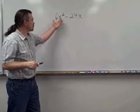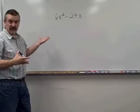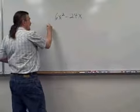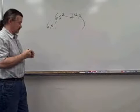What do we have as a common factor between 6x squared and 24x? Well, hopefully we can see right off the bat that 6 is a factor of both 6 and 24, and hopefully we can also see that there's an x in both of those terms.